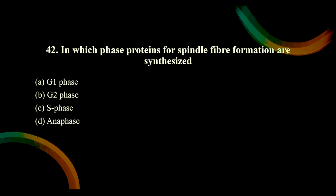In which phase are proteins for spindle fiber formation synthesized? Spindle fibers are used to segregate chromosomes in anaphase. Before anaphase, proteins must be produced. In the cell cycle: G1, S, G2, then M phase. Before M phase there is G2 phase. In the G2 phase, proteins for spindle fibers are produced. So the correct option is B, G2 phase.